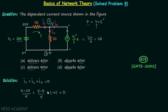From the KCL equation we can find the only unknown, V. Solving it gives V equal to 20 volts. The potential at the reference node is 0 volts, so the potential difference across the dependent current source is 20 minus 0, which is 20 volts.